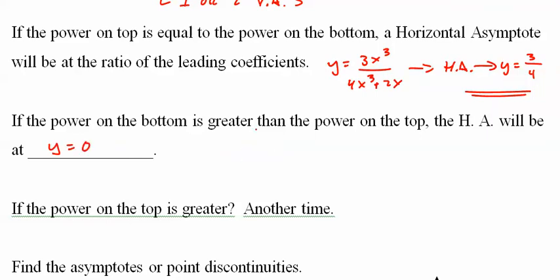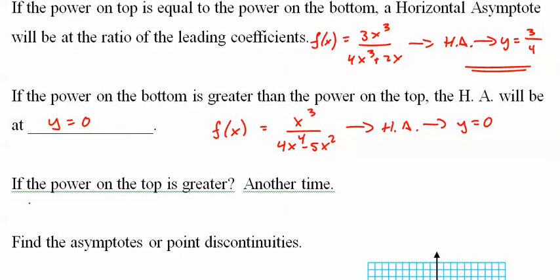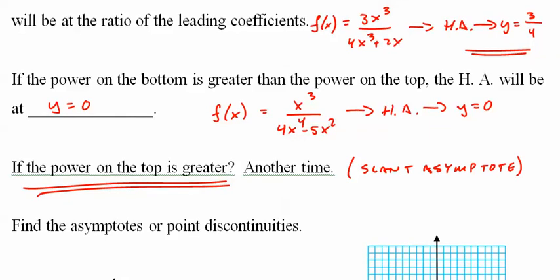So if you had x to the third over 4x to the fourth minus 5x squared, you're going to have a horizontal asymptote at y equals zero. Now a lot of people say, okay what if the power on the top is greater? We'll have a slant asymptote, but we'll do that one another time, soon enough.